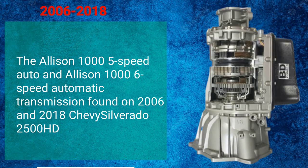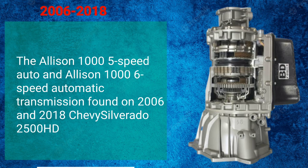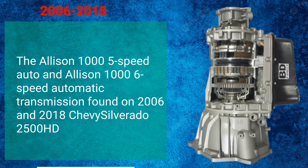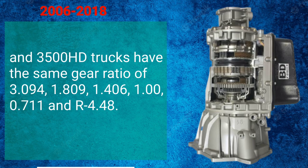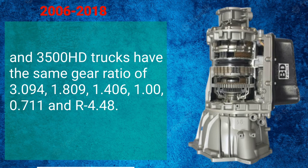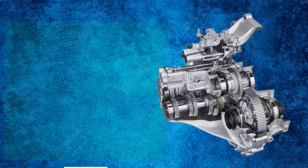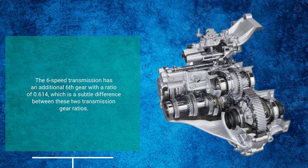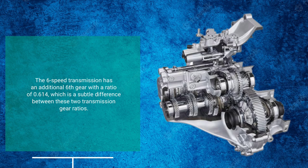Likewise, the Allison 100 5-speed auto and Allison 100 6-speed automatic transmission found on 2006 and 2018 Chevy Silverado 2500 HD and 3500 HD trucks have the same gear ratio of 3.094, 1.809, 1.406, 1.00, 0.711, and reverse 4.48. The 6-speed transmission has an additional 6th gear with a ratio of 0.614, which is a subtle difference between these two transmission gear ratios.